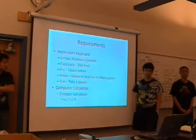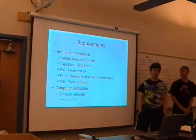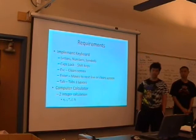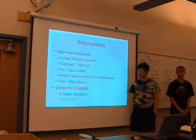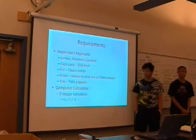We had a switch that switched it between a keyboard and a calculator. Our keyboard displayed letters, numbers, and symbols. To make it capitalized or show symbols, you hit the caps lock key, which changed it to either capitalized or symbol. Pressing escape clears the screen, and enter moves it to the next line or clears the screen when it exceeds two lines. Tab shifts it over three spaces.